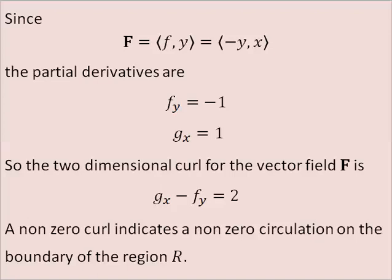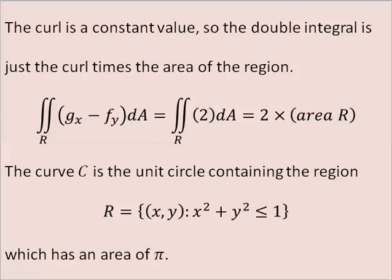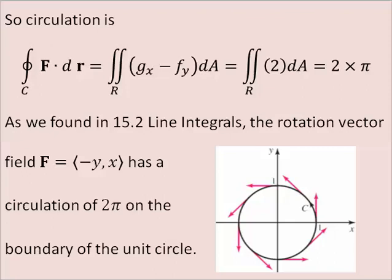A non-zero curl indicates a non-zero circulation on the boundary of the region. The curl is a constant value, so the double integral is just the curl times the area of the region. The area contained by the unit circle is pi. As we found in line integrals, the rotation vector field has a circulation of 2 pi on the boundary of the unit circle.